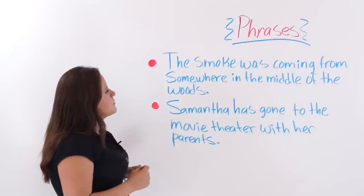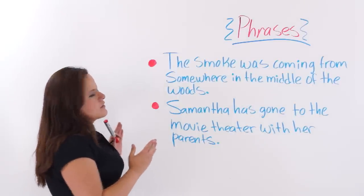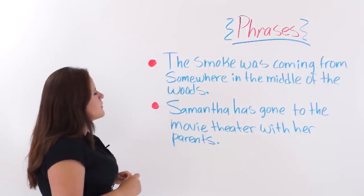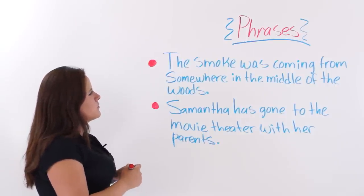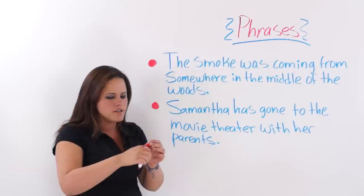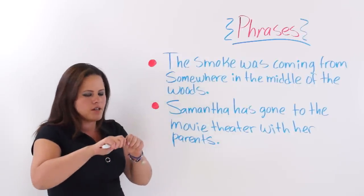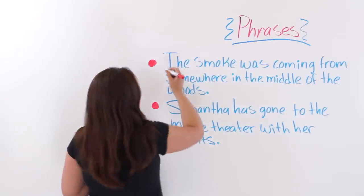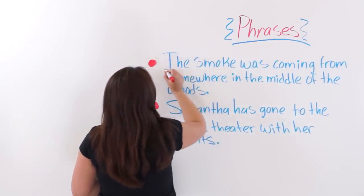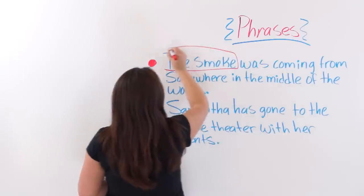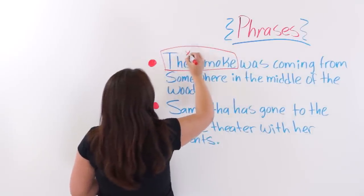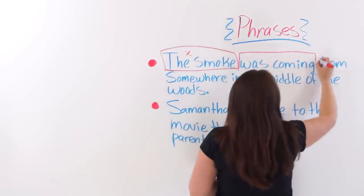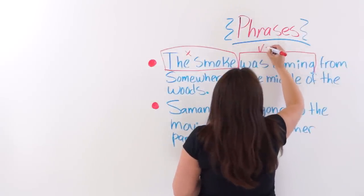The first example here on the board is a complete and concrete sentence. It says: the smoke was coming from somewhere in the middle of the woods. But phrases don't have a subject or a verb. So if we take this away — 'was coming' by itself would be a verb phrase.